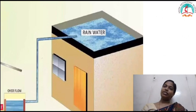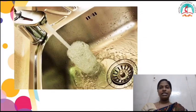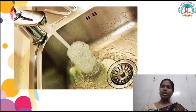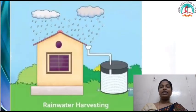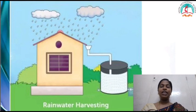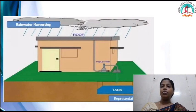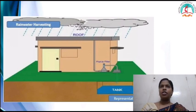Now let's discuss about rainwater harvesting. Before that, let me ask you a question. Do you need to save water? Why do we need to save water? We need to save water for the future generation. Water is also an important resource, so we should not waste water. We have a process to save water, and the name of the process is rainwater harvesting. Rainwater harvesting is one of the simplest and oldest methods of self-supply of water for household purposes.